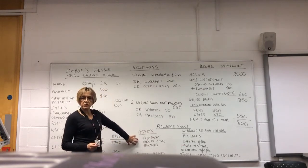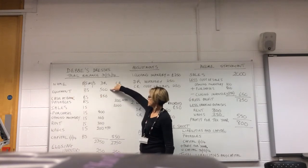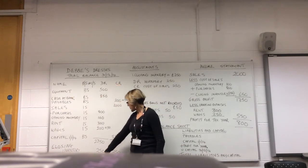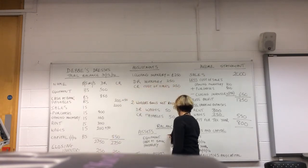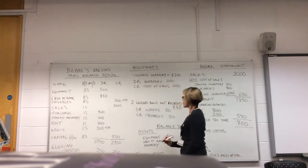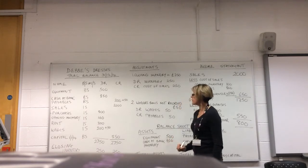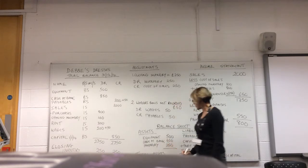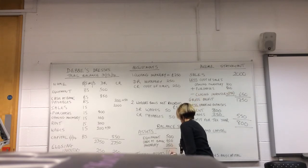Now we're ready to do our balance sheet. We'll deal with the assets first. We've got some equipment in our trial balance, we've got some cash, and remember we've also got the asset of closing inventory. So we've got equipment £500, cash £850, and closing inventory of £250. So the total of our assets is £1,600.